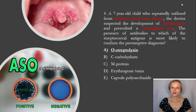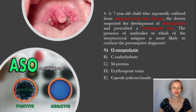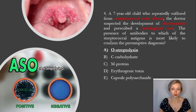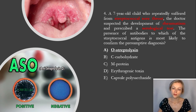Test number four. A seven-year-old child who repeatedly suffered from streptococcal sore throat — you can see it in this photo. The doctor suspected the development of rheumatism and prescribed a serological test. The presence of antibodies to which streptococcal antigen is most likely to confirm the presumptive diagnosis? Rheumatic fever can occur after a sore throat infection caused by group A streptococcus only.